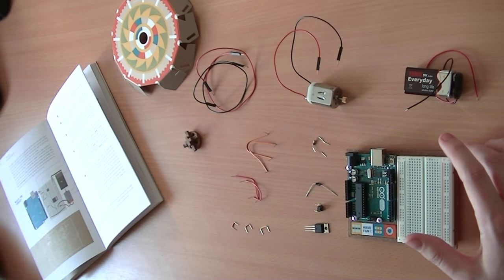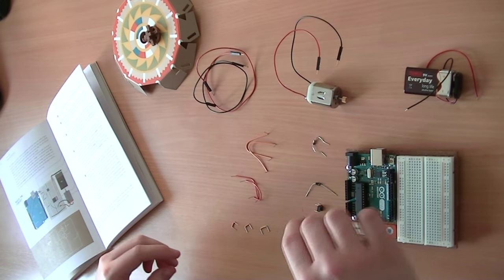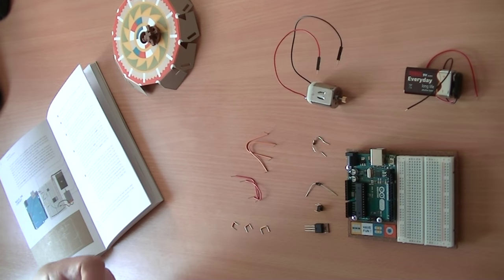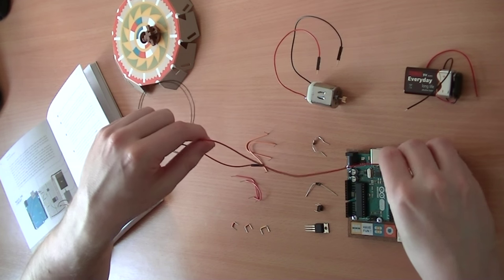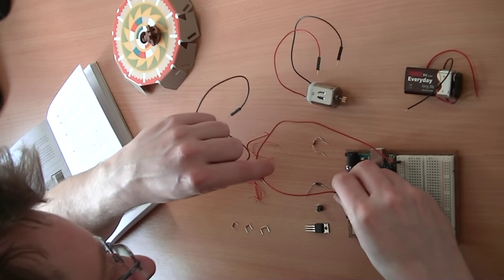So the first thing we're going to do is actually make the circuit itself. Let us make a start by attaching the power, as we always do, there to 5V, which is there.